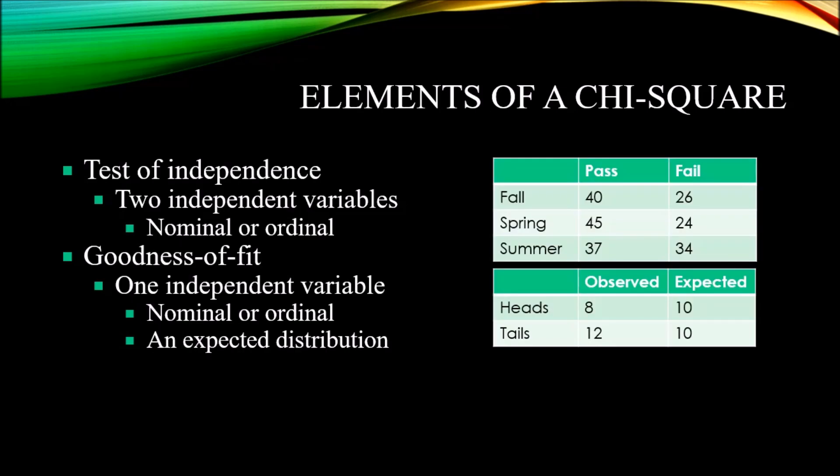Let's take a look at the elements of a chi-square test. Dividing this in two types, the test of independence and the goodness of fit. For the test of independence, we need two independent variables. For a chi-square, these independent variables would be either nominal or ordinal, measured at the nominal or ordinal level of measurement, most commonly at the nominal.